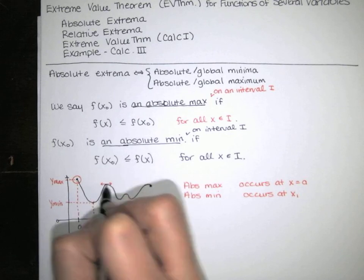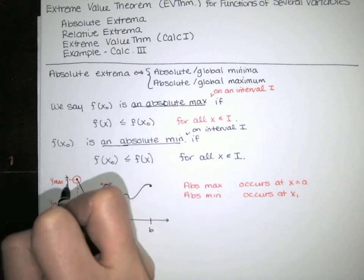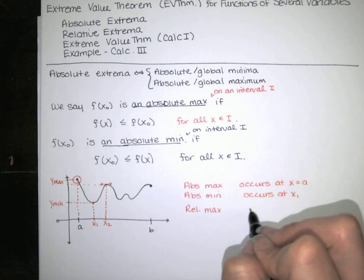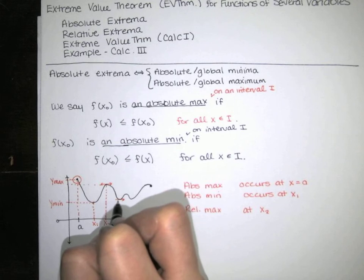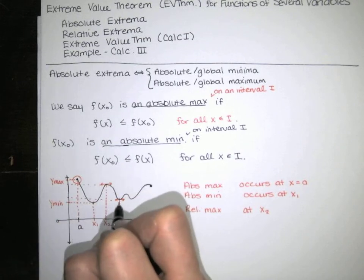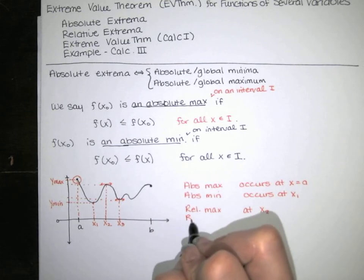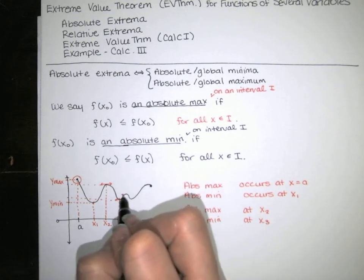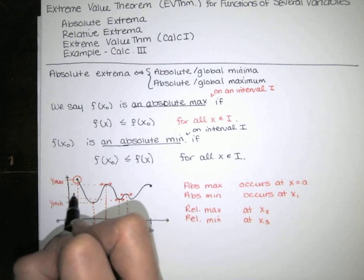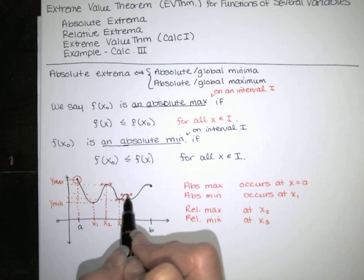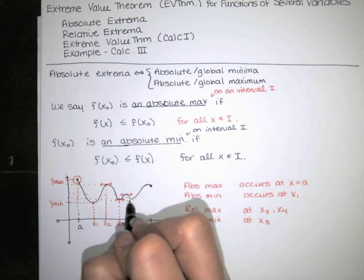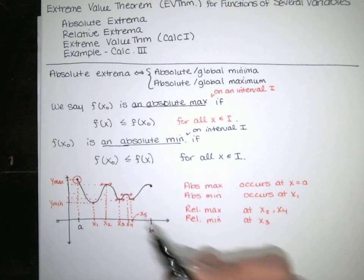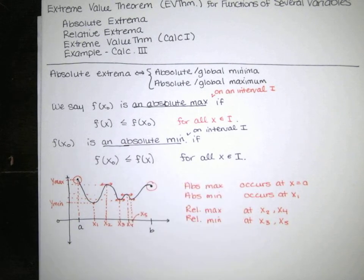Over here it looks like we've got a relative max — whatever that y value is — that occurs at x₂. And here, that y value occurs at x₃ — that's a relative min, because it's the smallest y value nearby. Then over here at x₄, we've got another relative max — it's the largest y value in the neighborhood. And at x₅, we've got another relative min.